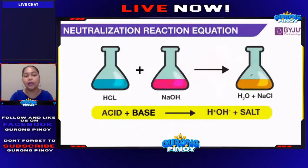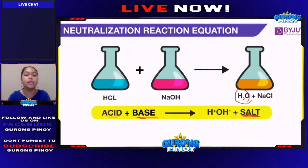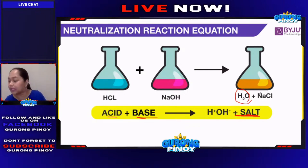Our answer a while ago was neutralization. Neutralization is a special type of chemical reaction which happens between an acid and a base. Whenever you have an acid and a base reacting, their products would always be water and a salt. This question came up on the let — the products of your acid and your base would always be water and salt. So that's the correct answer.